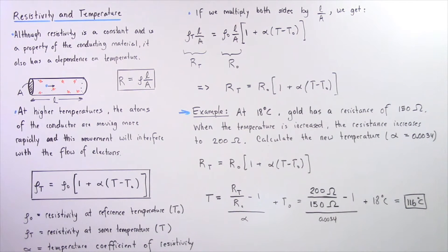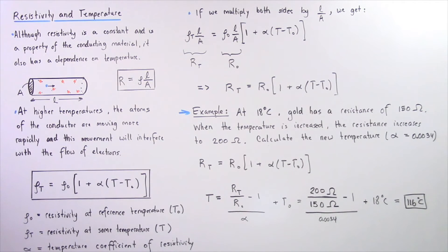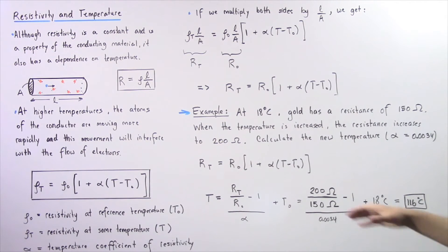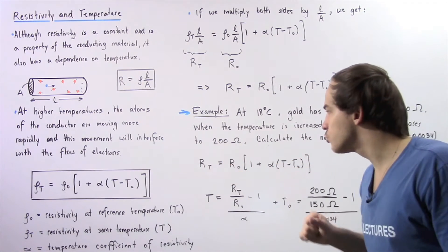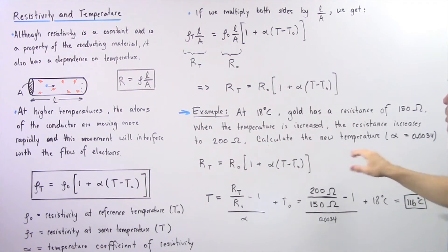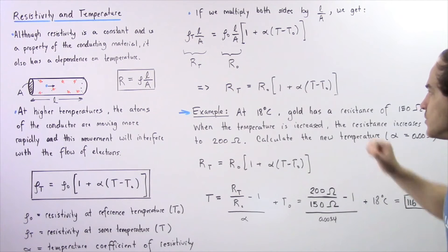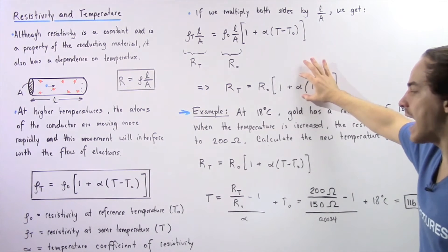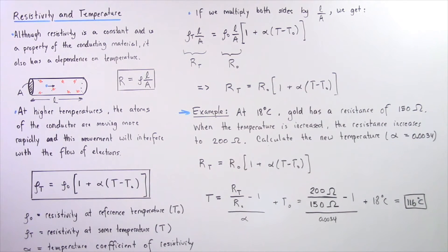At 18 degrees Celsius, gold has a resistance of 150 ohms. When the temperature is increased to some unknown temperature, the resistance increases to 200 ohms. Calculate using this equation what the new temperature is, knowing that α is equal to 0.0034.